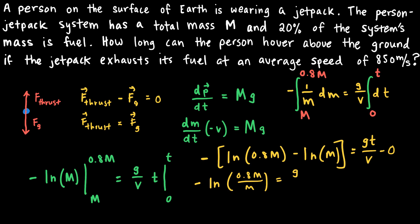The right-hand side is simply gt over v. The value of minus the natural log of 0.8 is a positive 0.22. So on the right-hand side, g is 9.8, v is 850 meters per second, and solving for t gives 0.22 times 850 divided by 9.8, which is roughly 19 seconds. That is the amount of time the person-jetpack system can hover.